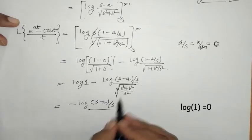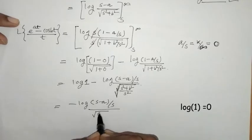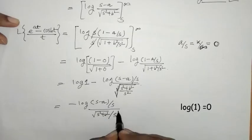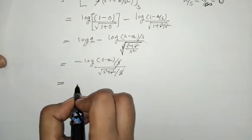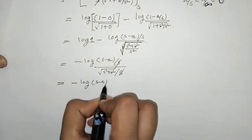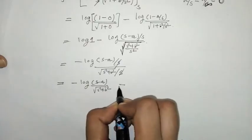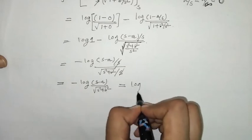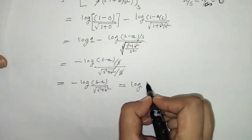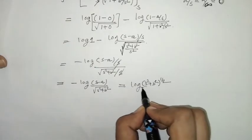When we take s² outside the root and apply the log rule, we can reverse the expression to get (1/2) log(s² plus b²). Combining everything, the final result for the Laplace transform of (e^(at) minus cos(bt))/t is log of (s minus a) over root(s² plus b²), with the 1/2 factor applied.